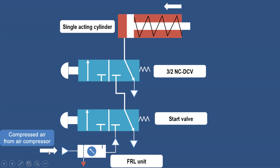Compressed air from the air compressor enters into the FRL unit — that is the filter, regulator, and lubricator unit — then it enters into the start valve. In the right envelope mode, when the push button is not operated, the air line is connected to the block port and therefore no operation is performed. The two valves are not connected, so no air is admitted on this side of the piston, and therefore there will be a retraction of the piston against the spring force, giving the return motion.